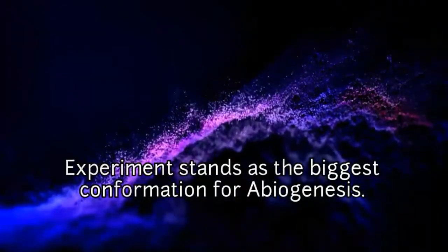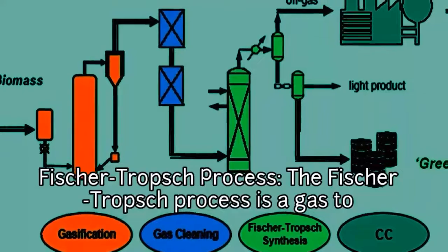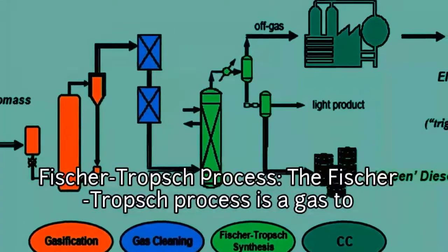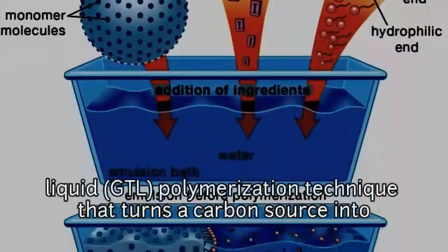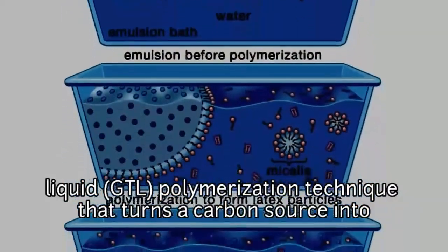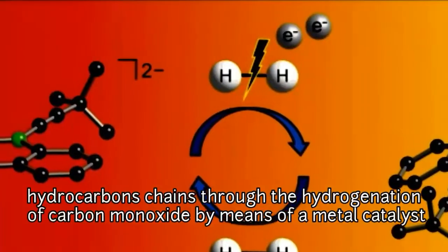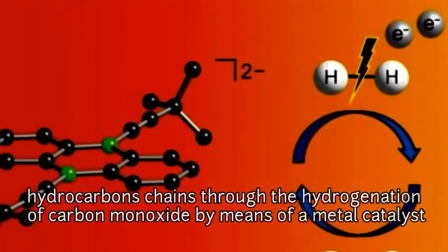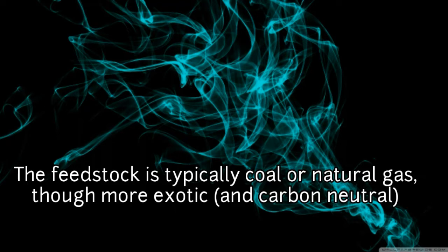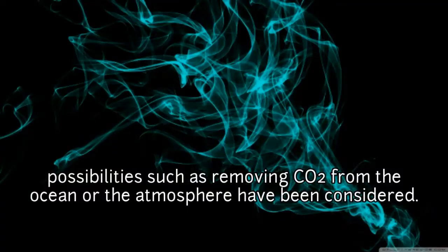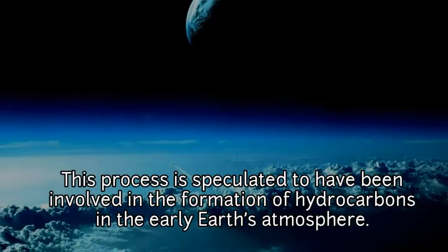The Fischer-Tropsch Process. The Fischer-Tropsch process is a gas-to-liquid polymerization technique that turns a carbon source into hydrocarbon chains through the hydrogenation of carbon monoxide by means of a metal catalyst. The feedstock is typically coal or natural gas, though more exotic and carbon-neutral possibilities such as removing CO2 from the ocean or atmosphere have been considered.